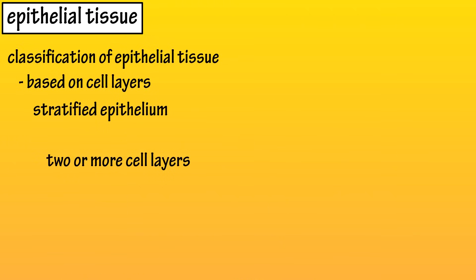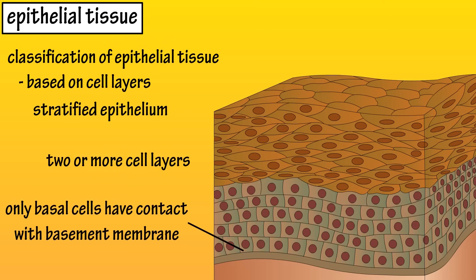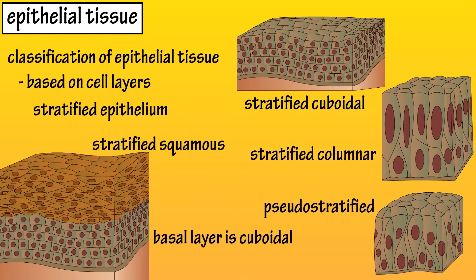Stratified epithelium has two or more layers of cells. Only the deepest basal layer cells have direct contact with the basement membrane, and their formation looks like a brick wall. This formation provides better structural support and protection from wear or tear. Again, there are stratified squamous, stratified cuboidal, and stratified columnar epithelium. And pseudostratified epithelium is comprised of the pseudostratified cells we discussed earlier.